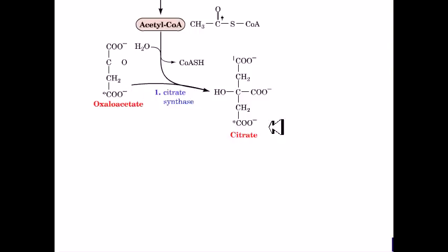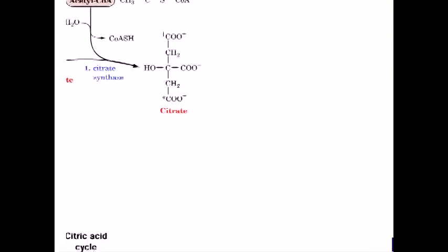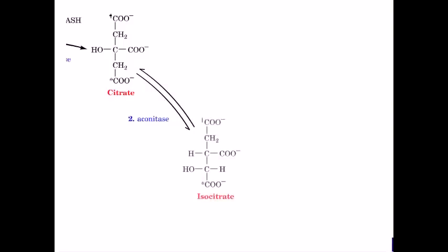In reaction 2, citrate is converted to isocitrate by the enzyme aconitase. In the reverse of the reaction, the enzyme activity of aconitase produces citrate from isocitrate.